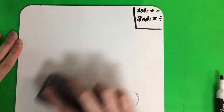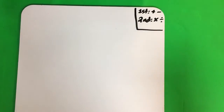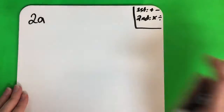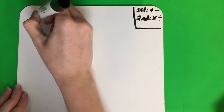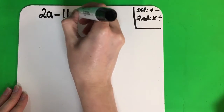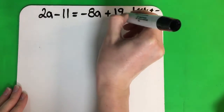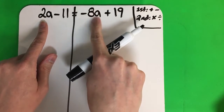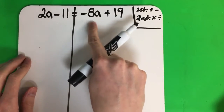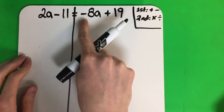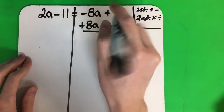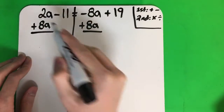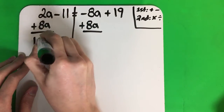Make sure that you've copied everything down. Make sure you can rewind if you need to. Next one — let's do 2A. 2A minus 11 equals negative 8A plus 19. Start with your line on the equal sign. We need to move a letter — always move the one on the right. This is negative 8A. The opposite of negative is positive, so plus 8A. Copy to the other side, put it with the A: plus 8A. 2 plus 8 is 10A.